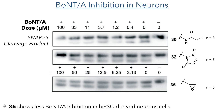To better understand how these compounds might work in the body, the researchers studied BoNT-A inhibition in human-derived pluripotent stem cells, using western blot analysis to quantify SNAP25 protein and its cleavage product. The intensity of the top band corresponds to SNAP25 protein, while the lower band is the cleavage product; the negative control showed no cleavage product. Compounds 30 and 32 showed complete inhibition of BoNT-A at 100 micromolar with a dose-dependent decrease at lower concentrations, while compound 36 showed much less activity — even at 100 micromoles, it showed very little inhibition, contrary to previous studies.